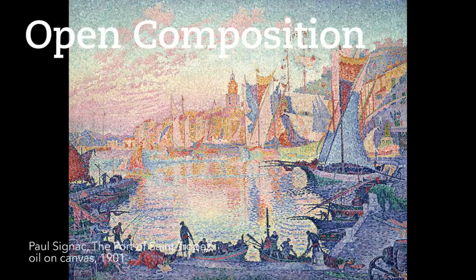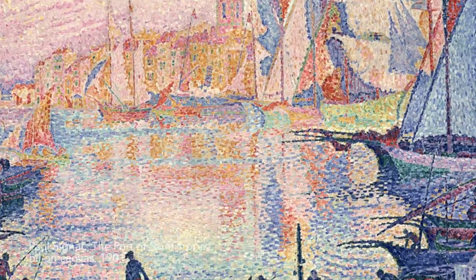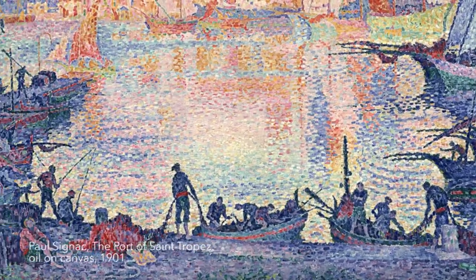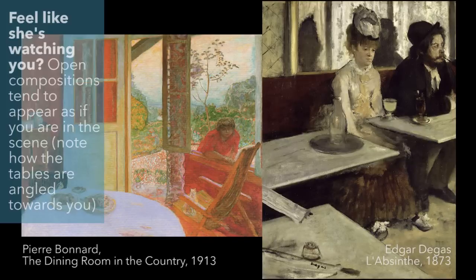An open composition, as you can probably guess, is the opposite. There isn't a singular focal point and the visual elements keep your eyes moving around. Subjects may be placed at the edge of the scene and they create a sense of environment beyond the frame, unlike a closed composition where it appears complete.